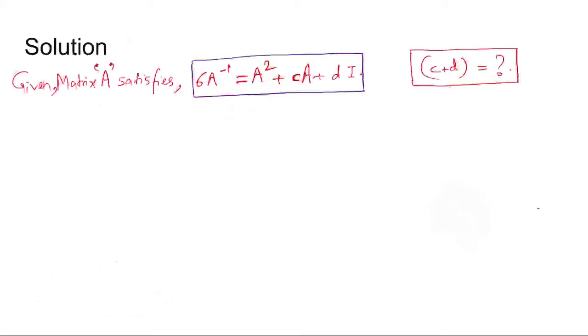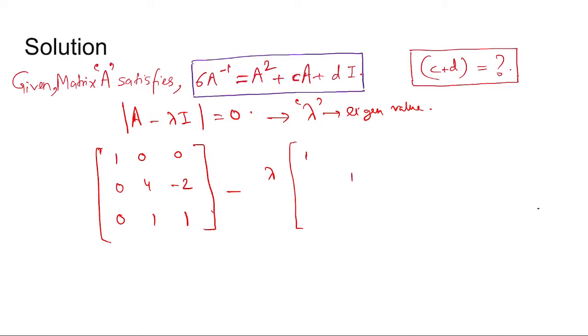Now A minus lambda I determinant equal to 0. This is the method to find lambda which is the eigenvalue for matrix A, so this minus lambda times I, I is identity matrix which is like this.